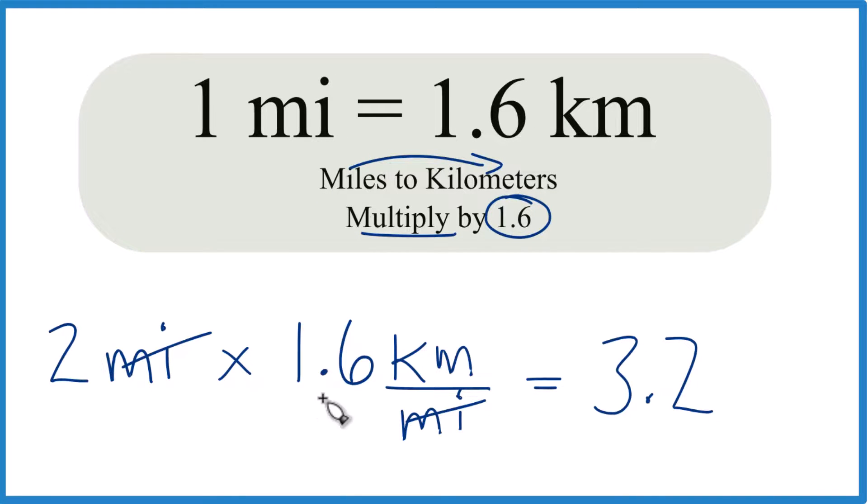That's what we're looking for. Two times 1.6, 3.2 kilometers. So in answer to our question, when we convert two miles to kilometers, we multiply by 1.6, we get 3.2 kilometers.